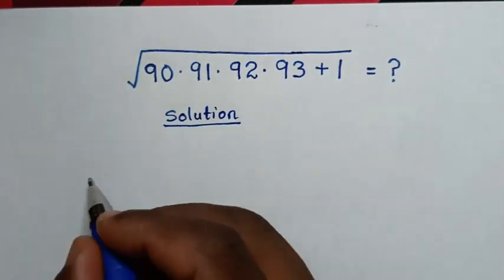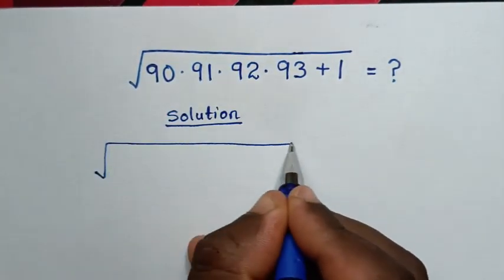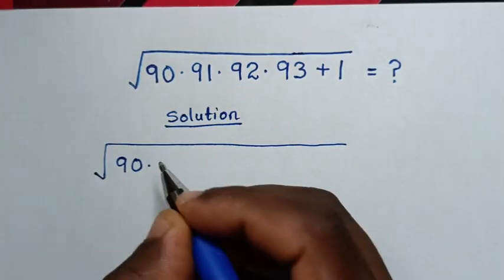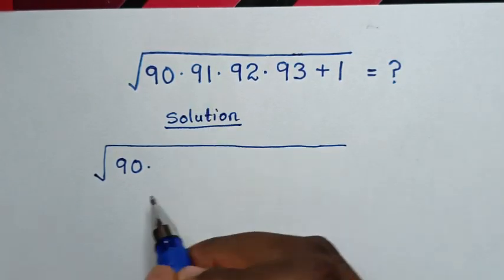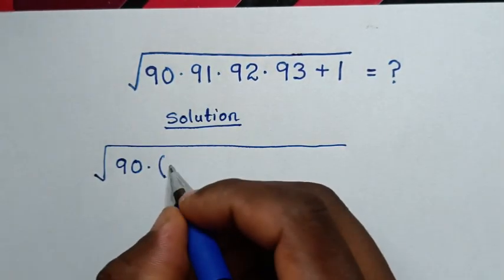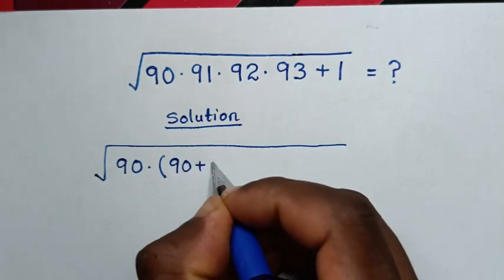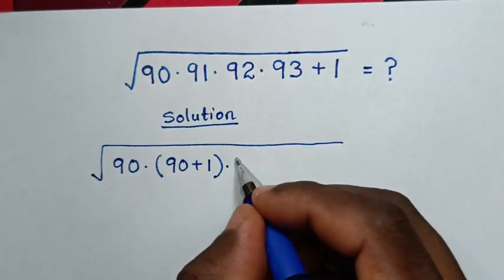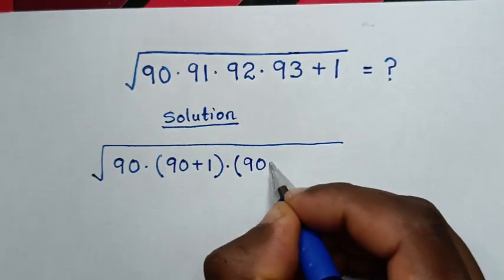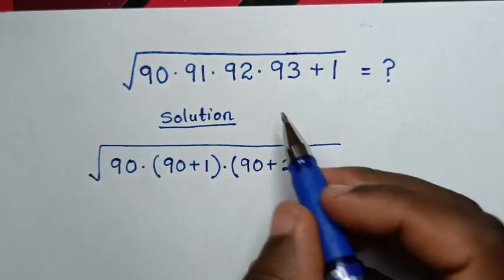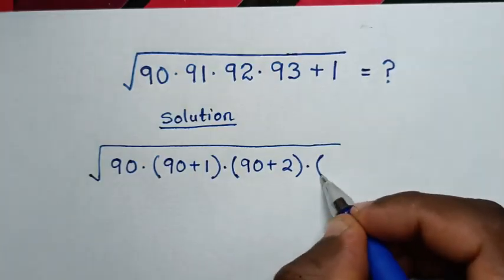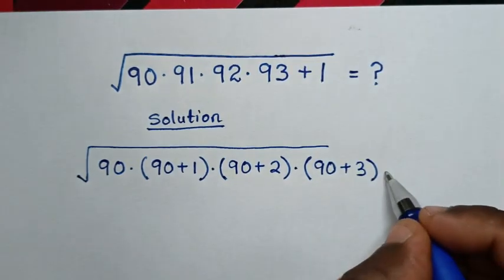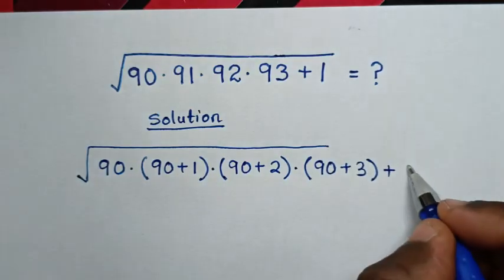From the problem, which is square root of 90 times 91 — to have a common base of 90, we note that 91 is the same as (90+1), 92 is the same as (90+2), and 93 is the same as (90+3), then plus this 1.